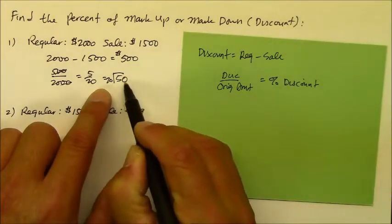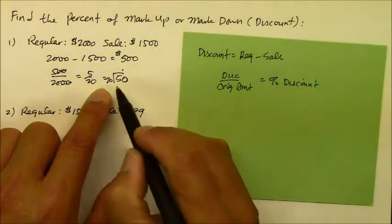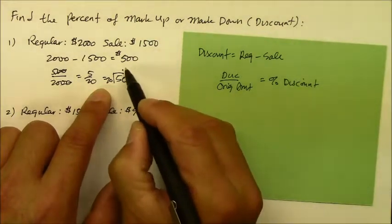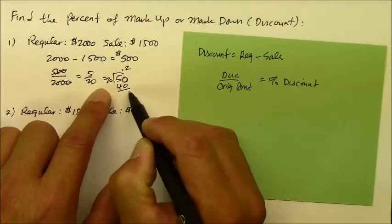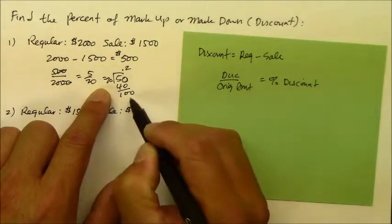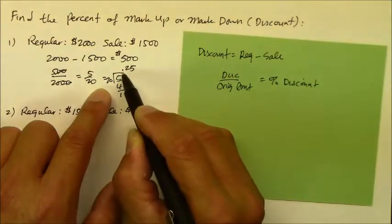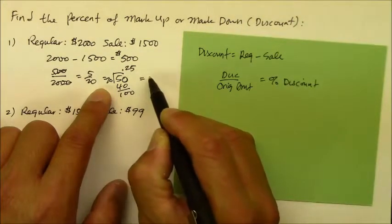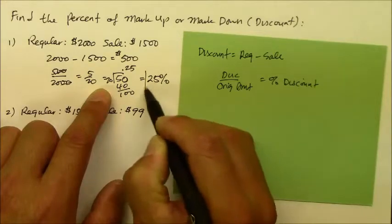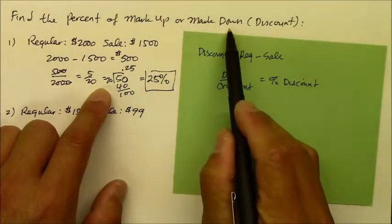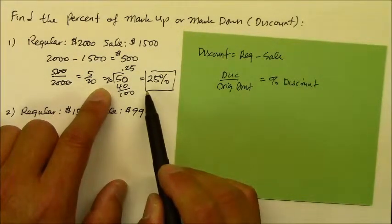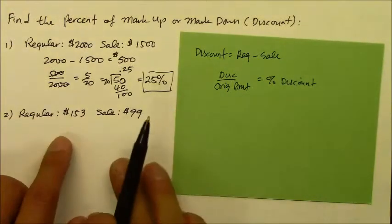Put a zero and a decimal on top. Does 20 go into 50? Two times. And 20 goes into 100, 5 times. And 0.25 is a decimal. To make that into a percent, you move it twice to the right, it becomes 25%. And that is a discount or the markdown for this problem. So why don't you try number 2?